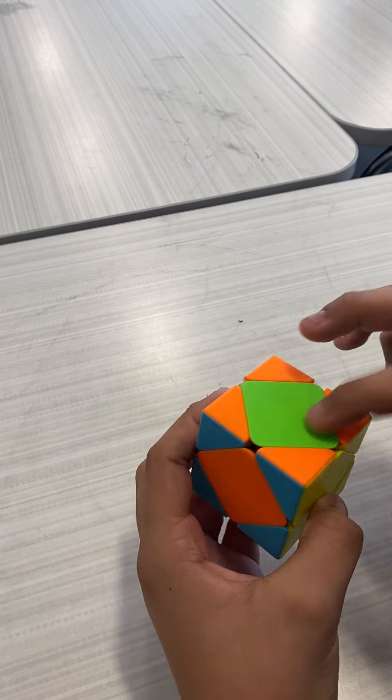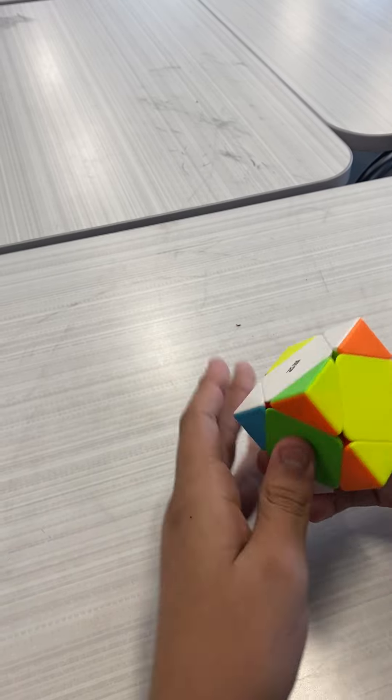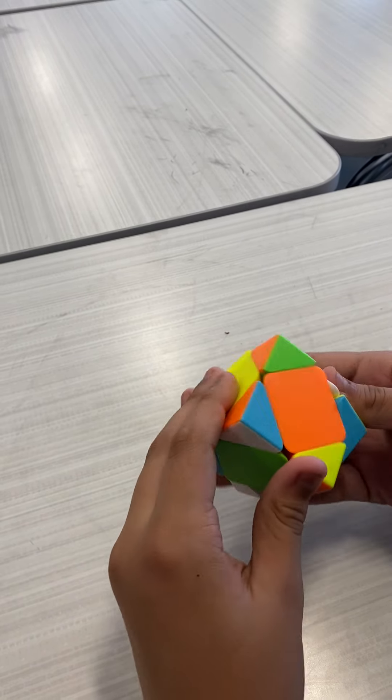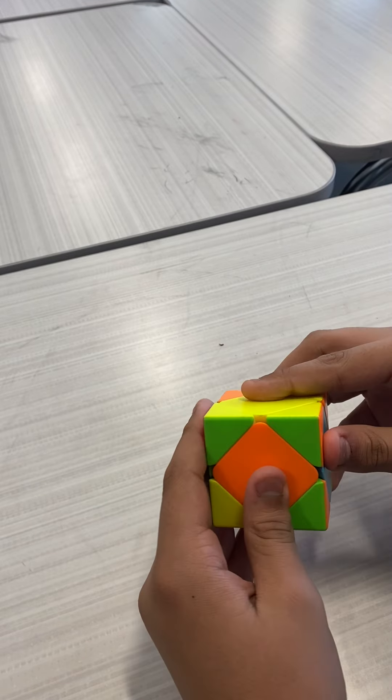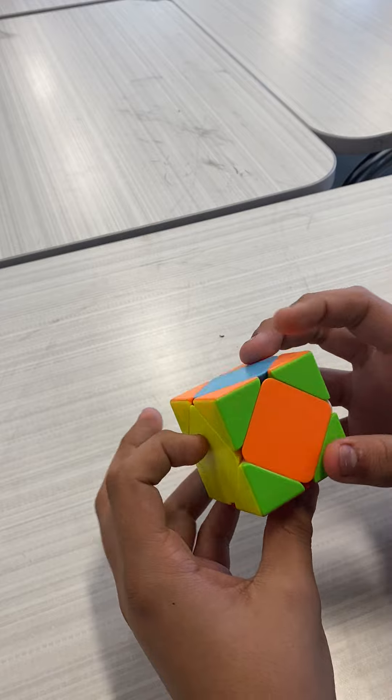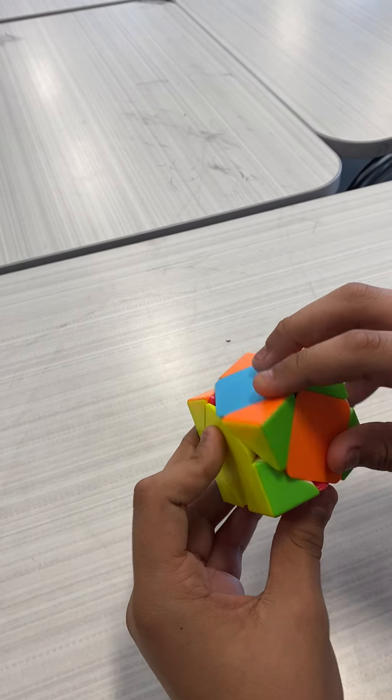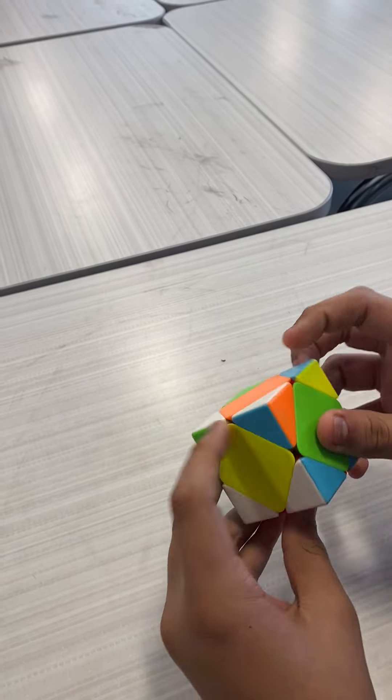So now that we have one, two, three right here, we can just do down, down, up. It's gonna get solved. Are you watching this? Math genius at work. Let me just do it again: down, down, up, up, down.